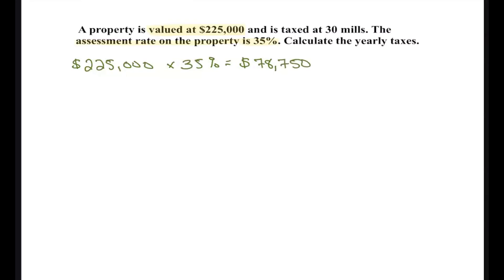A tip: when you're stuck wondering whether to multiply or divide — I think about tipping at a restaurant. If I want to leave 20%, I take the bill and multiply by 20% because I'm trying to find 20% of my bill. Same thing here: we were trying to find 35% of $225,000. It's like $225,000 was my restaurant bill and I'm tipping them 35%.